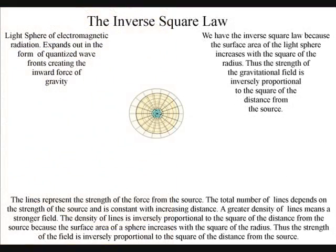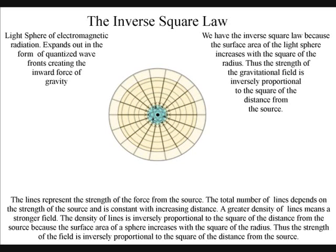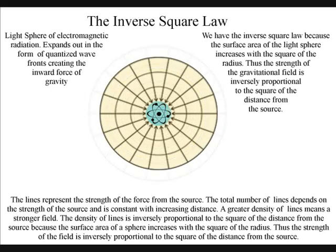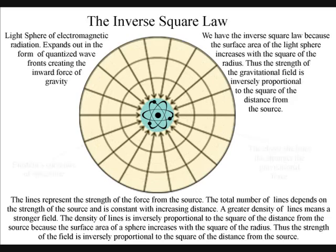We have the inverse square law, because the surface area of the light sphere increases with the square of the radius, thus the strength of the gravitational field is inversely proportional to the square of the distance from the source.